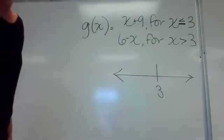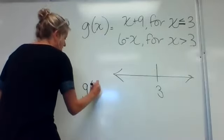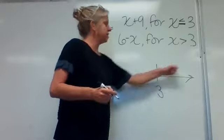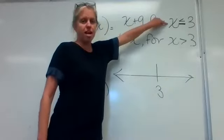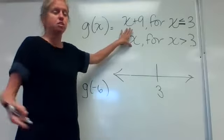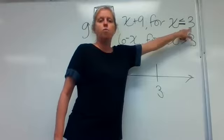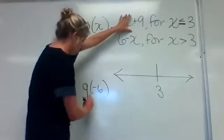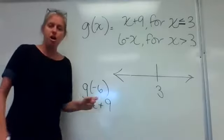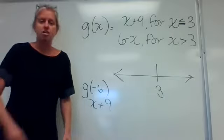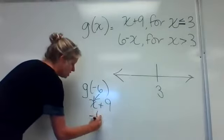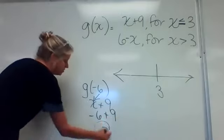The first thing it wants me to find is g of negative six. Where is negative six — is it below three or above three? Negative six is less than three, so it goes in the x plus nine part. Here's where this takes it one step further: now that we found the part, plug in the negative six for x. So I have negative six plus nine, which gives me positive three.